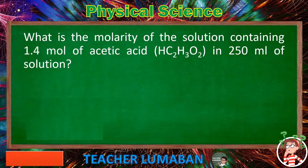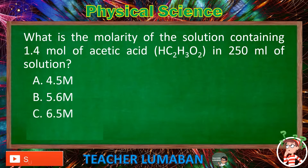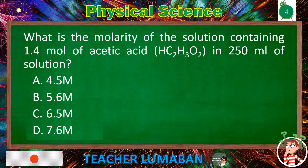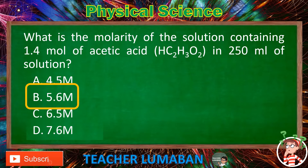What is the molarity of the solution containing 1.4 mole of acetic acid (HC2H3O2) in 250 mL of solution? Letter A: 4.5 M. Letter B: 5.6 M. Letter C: 6.5 M. Letter D: 7.6 M. The correct answer is Letter B, 5.6 M. 5.6 M is the molarity of the solution containing 1.4 mole of acetic acid (HC2H3O2) in 250 mL of solution.